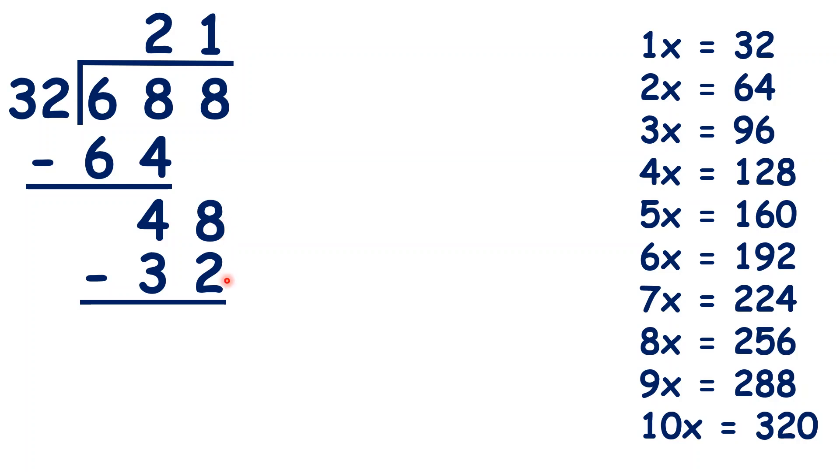Now 48 minus 32 is 16, but it seems like we have nothing left to bring down. But what we can do here is extend the place values in the question with a point 0, because 688.0 is the same as 688. We haven't changed the question. So now, because there's a decimal point in the question, we need to copy up the decimal point into our answer.